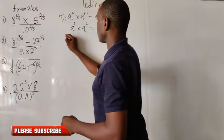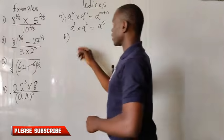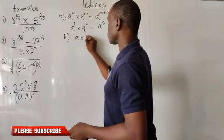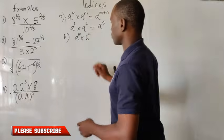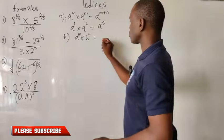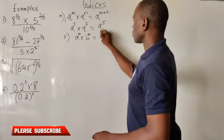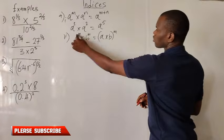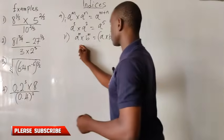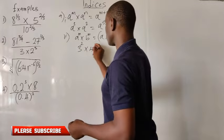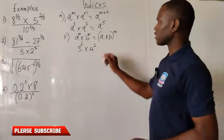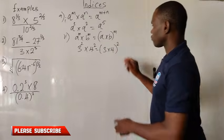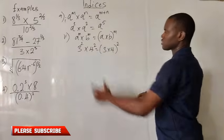The second part of the multiplication law is when we have different bases but equal powers. For instance, a times b both raised to the power m — since the powers are equal, all I do is factor the power out and multiply the two bases. So a multiplies a and b multiplies b, then I take one of the powers. For example, 3 raised to the power of 2 times 4 raised to the power of 2 simplifies to 3 times 4, raised to the power of 2. The bases are different but the powers are the same.